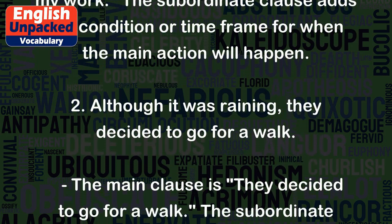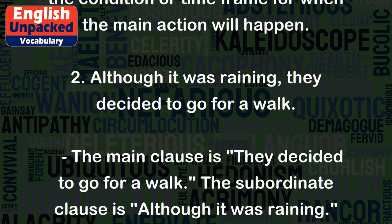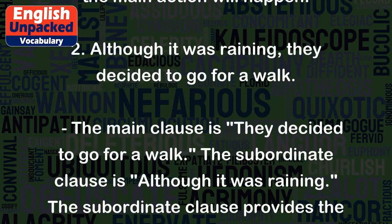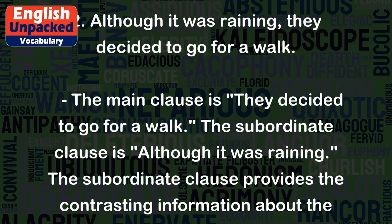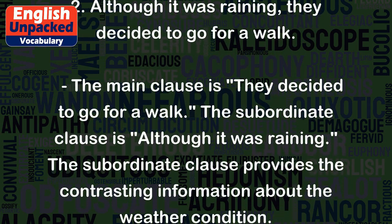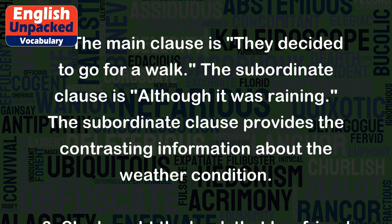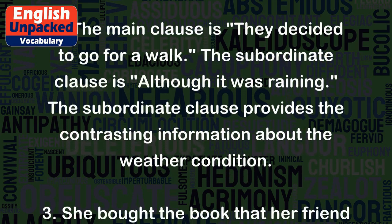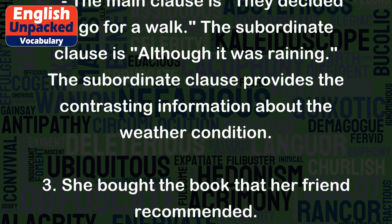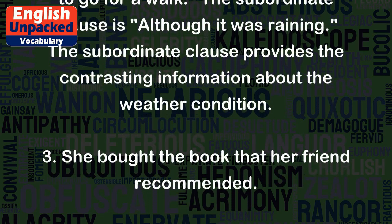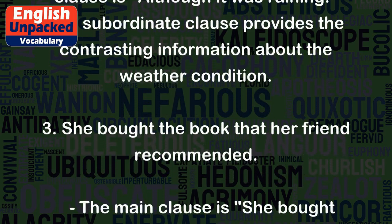2. Although it was raining, they decided to go for a walk. The subordinate clause is 'although it was raining.' The subordinate clause provides the contrasting information about the weather condition.